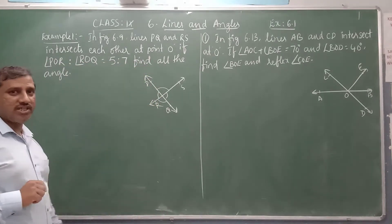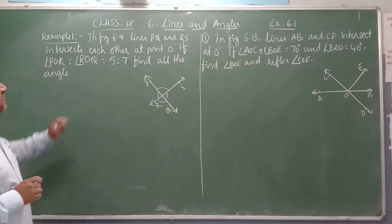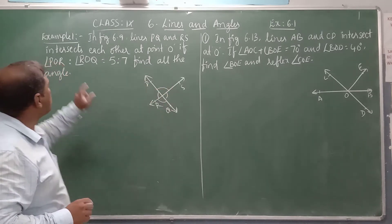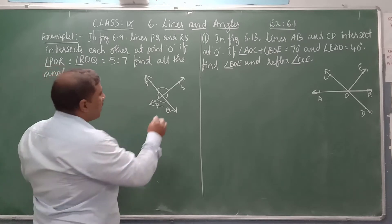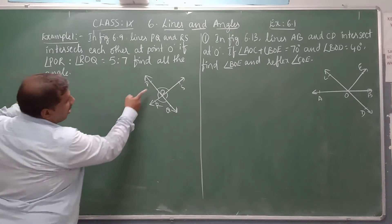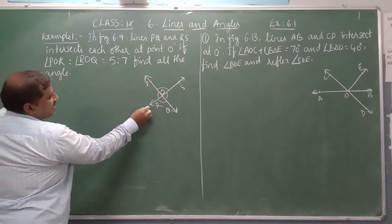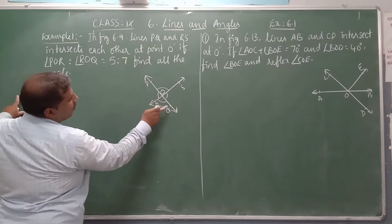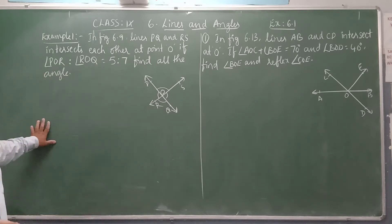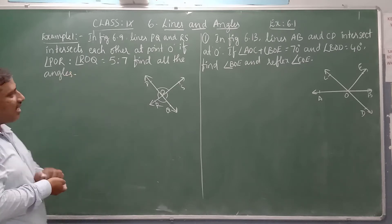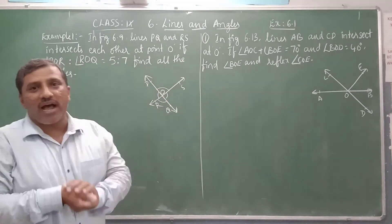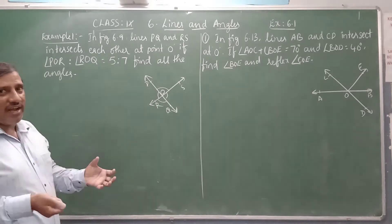We will discuss with the help of some questions. Example 1: In figure 6.9, PQ and RS are two lines that intersect each other at point O. This is the point of intersection O. Angle POR to angle ROQ — these two adjacent angles — the ratio is given as 5 is to 7. Find all the angles: POR, ROQ, QOS, and POS.